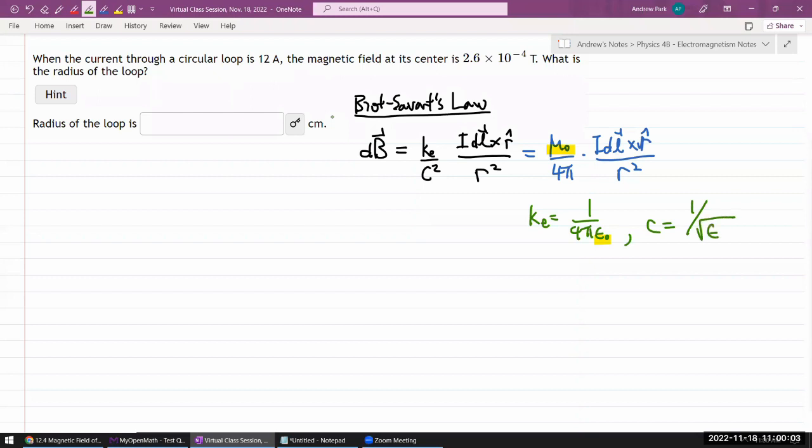Speed of light C can be expressed in terms of these two coefficients, 1 over square root of epsilon naught mu naught. So with these relationships, you can rewrite mu naught in terms of C and epsilon naught. Epsilon naught can be rewritten in terms of Coulomb constant. And that's what will get you this.